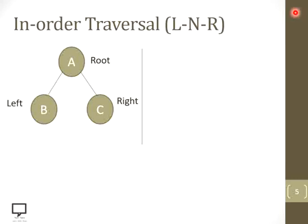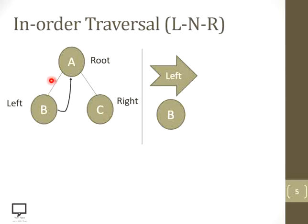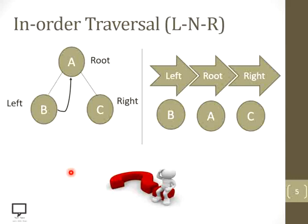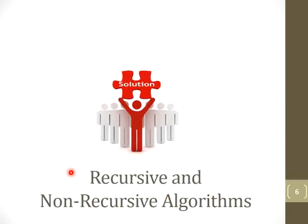Now let's start with the in-order traversal where we are supposed to follow the sequence: left subtree, then a root node, and then a right subtree. We are supposed to display the left child, that is B in the given example. Then we have to return back to the root node that is A, process it, and after that move to the right subtree. The question is: how to return back from a left child to a root node, since the tree does not have backtracking — that is, a link from a child node to a parent node. So how do we return back? The solution is recursive or non-recursive algorithms, and here we are focusing on the non-recursive algorithm.